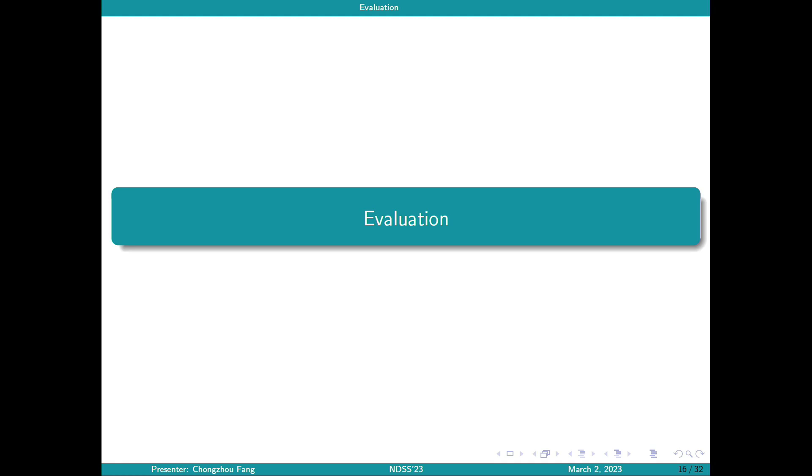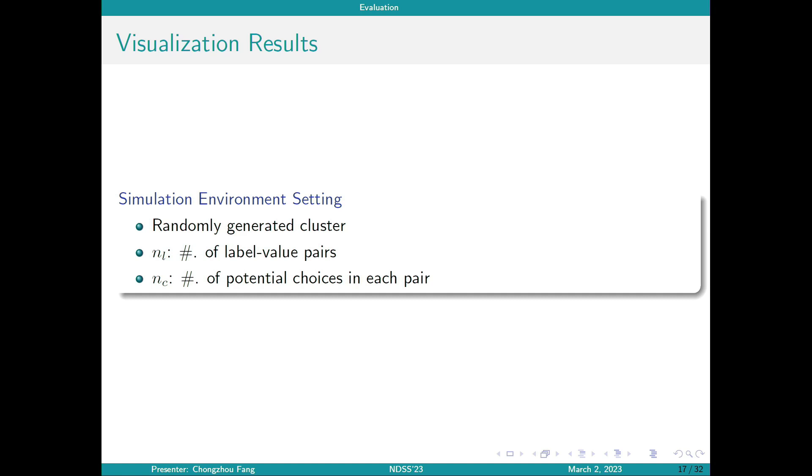So let's talk about evaluation results of our metric and our mitigation strategies. First, there are some visualization results. We obtained these results from a simulator that randomly generates server information of a cluster, and there are two parameters of this simulator. NL is the number of label-value pairs of the system, and NC is the number of potential choices in each pair. The heterogeneity increases as NL and NC increase. For convenience, we set NL equals to 3 and change NC.